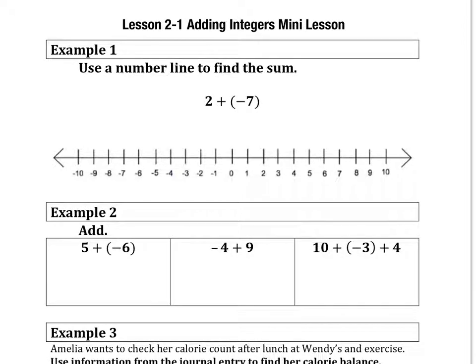Hi everyone! Today's mini lesson is 2-1 adding integers. The first example we're going to use a number line to find the sum. So the sum is 2 plus negative 7.